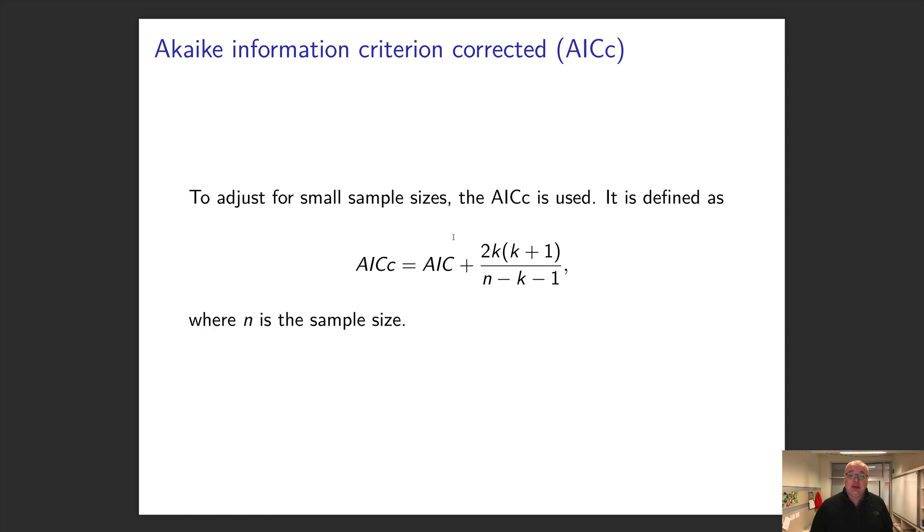So they corrected it. Now instead of 2k we've adjusted - we've got number of parameters, but we've got a term that takes into account how much data you have. The n is the sample size. So that's another one you could use, and that's one I would suggest you use for small sample sizes.